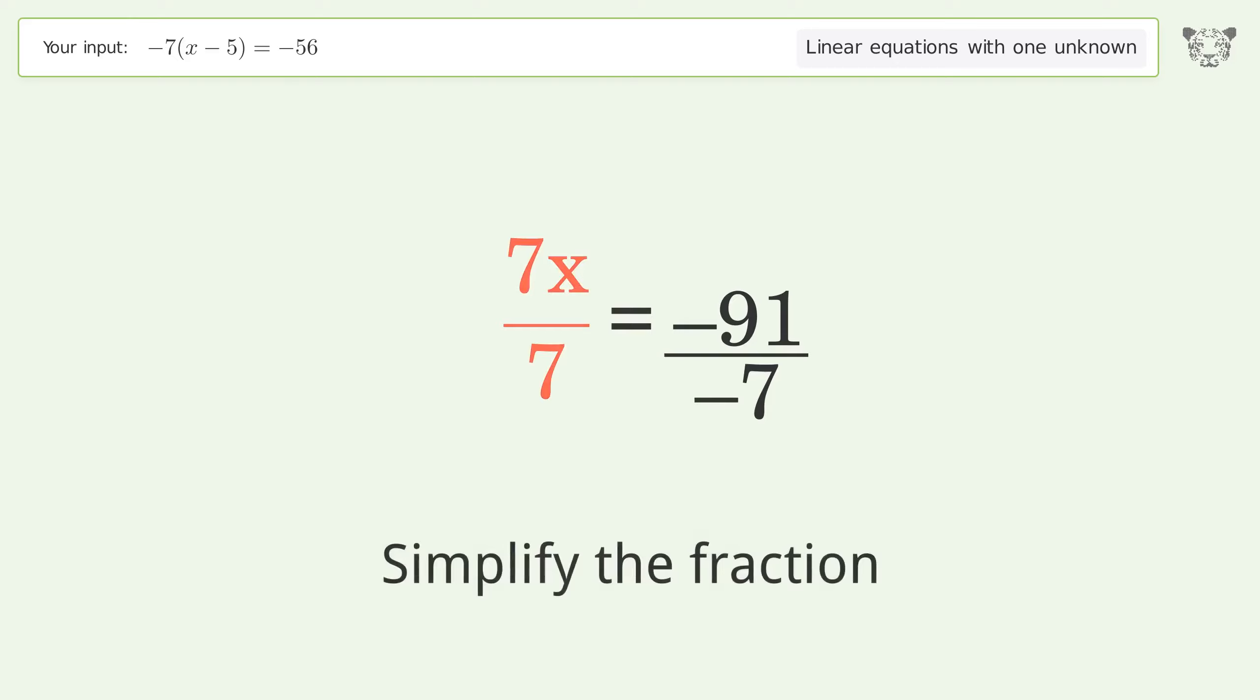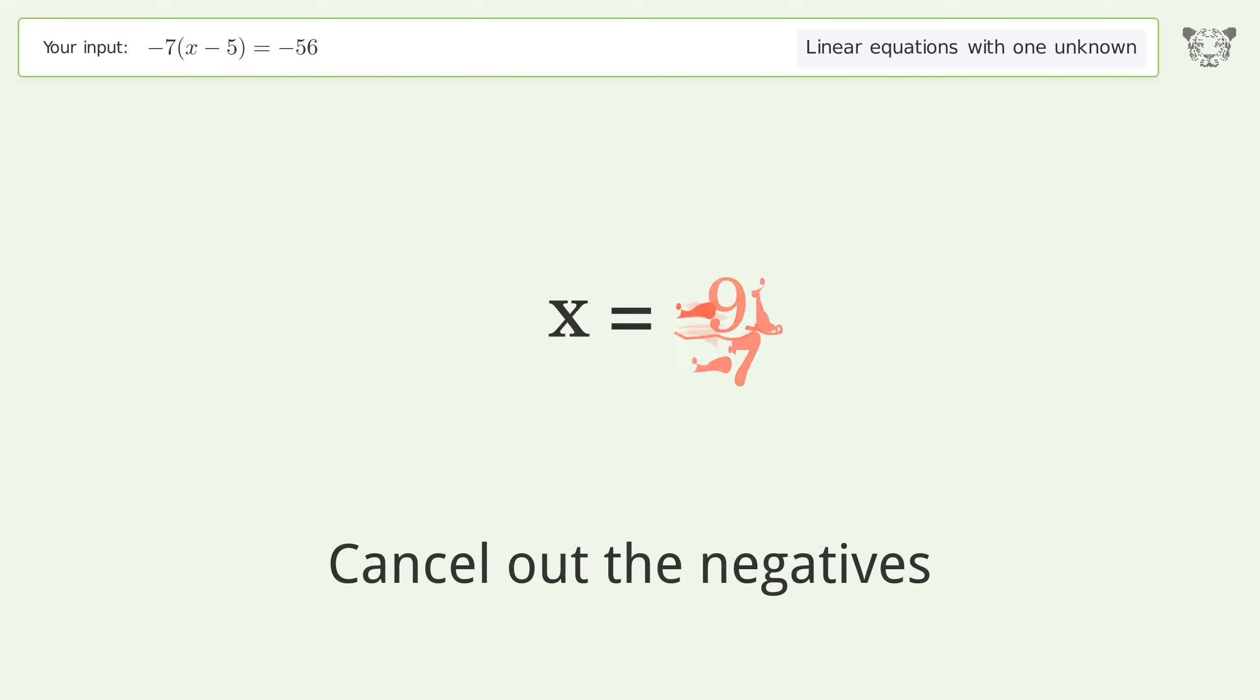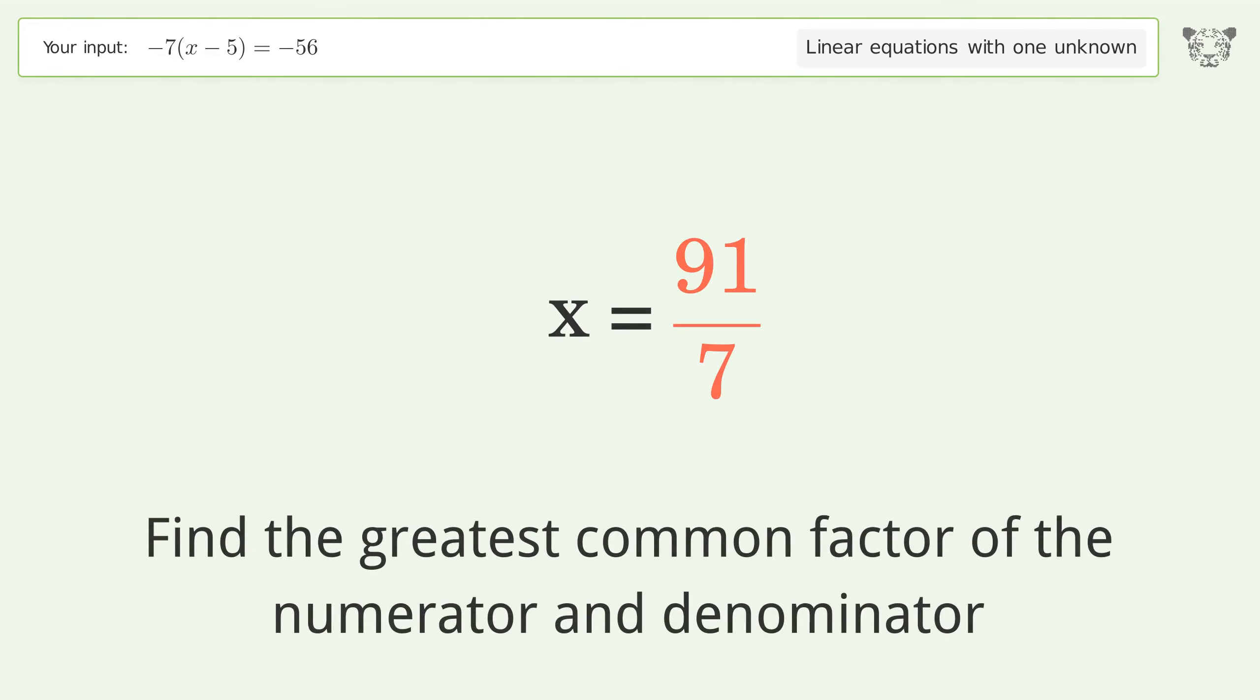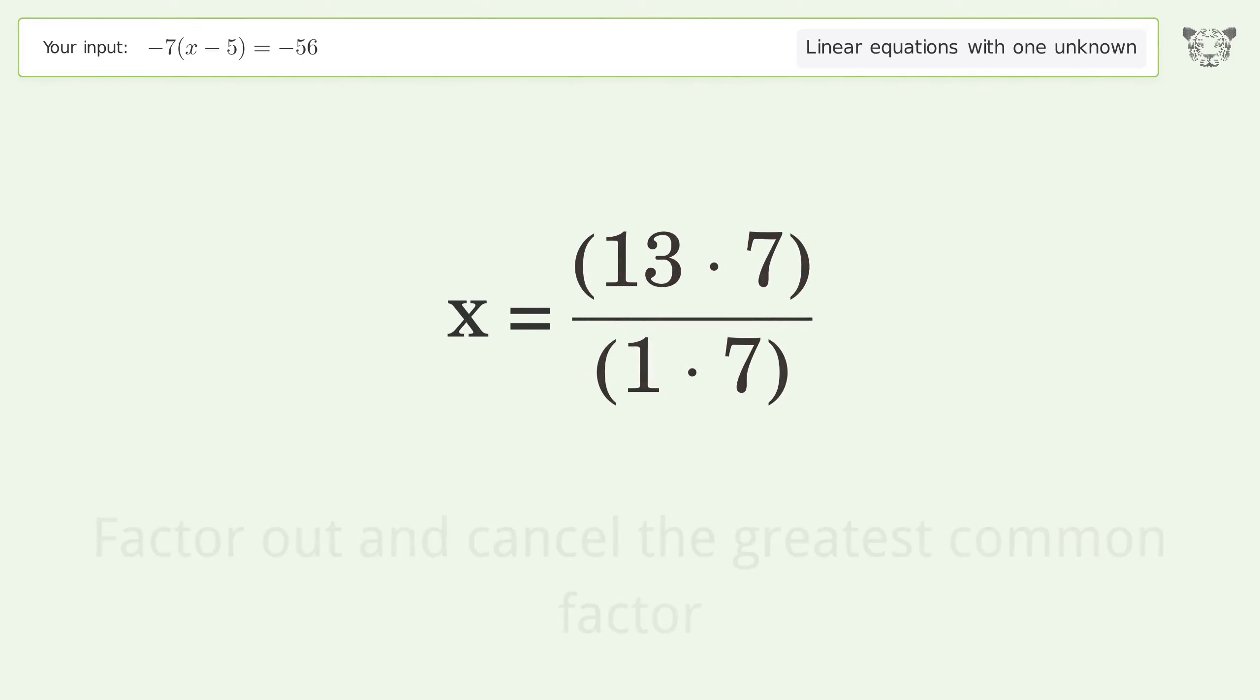Simplify the fraction. Cancel out the negatives. Find the greatest common factor of the numerator and denominator. Factor out and cancel the greatest common factor.